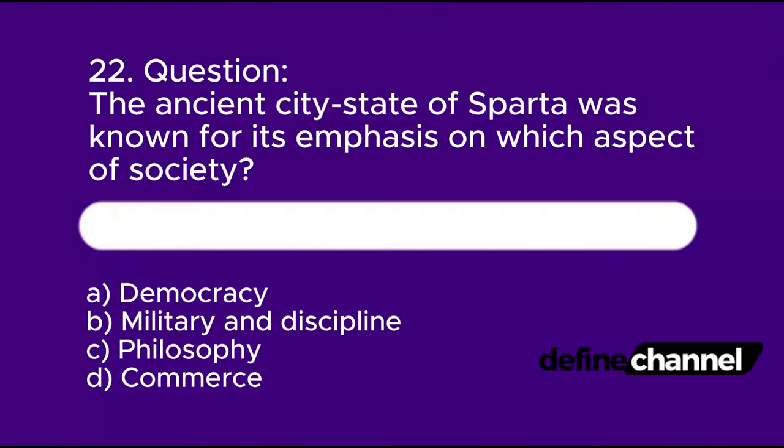Question 22: The ancient city-state of Sparta was known for its emphasis on which aspect of society? A. Democracy, B. Military and discipline, C. Philosophy, D. Commerce. Please determine which is the correct answer.